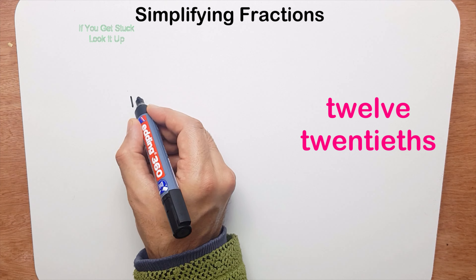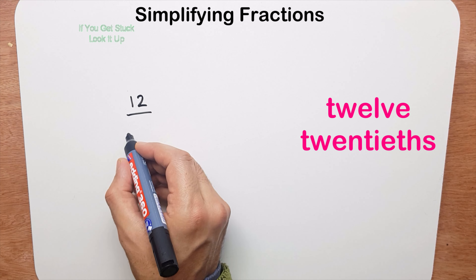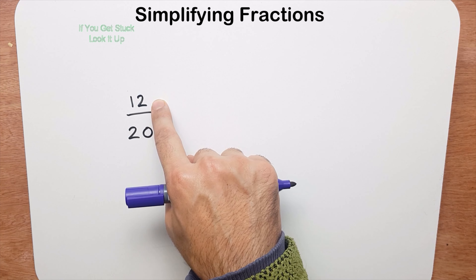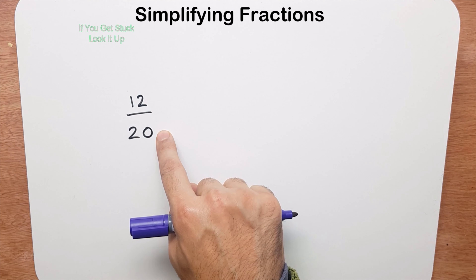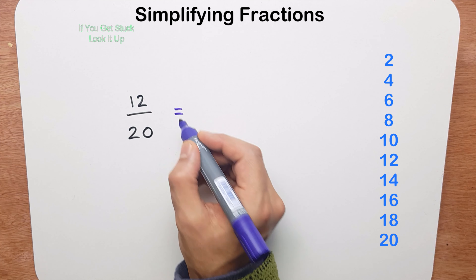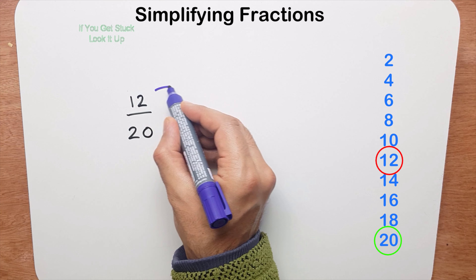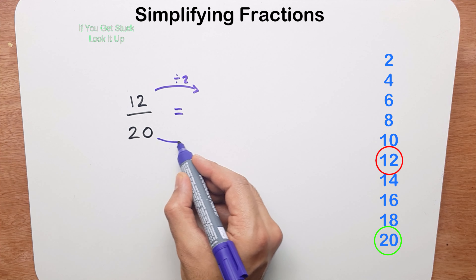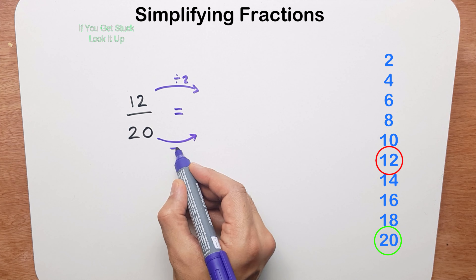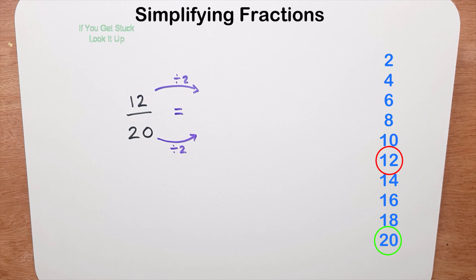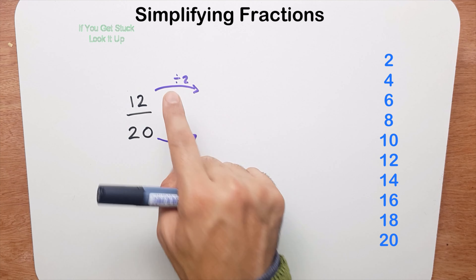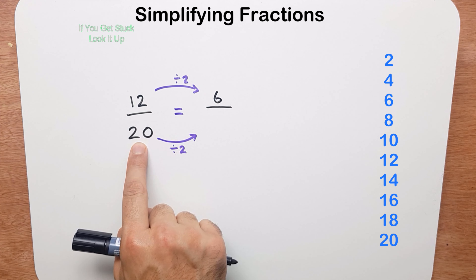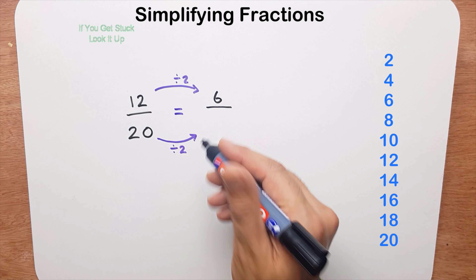My next question is 12 twentieths. I ask myself which times table 12 and 20 are both in. I can see they're both in the 2 times table. So I divide the top by 2, and whatever I do to the top I have to do to the bottom. 12 divided by 2 is 6, and 20 divided by 2 is 10.